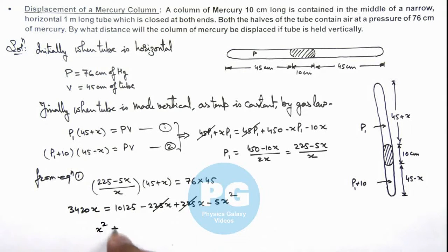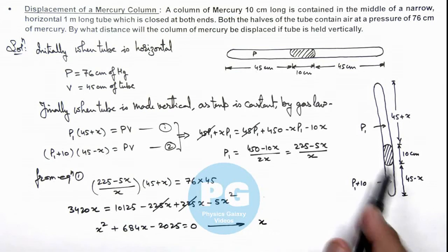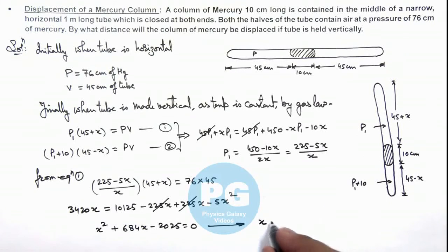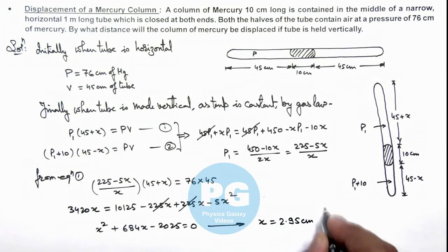Now you can directly simplify this quadratic equation and get the roots of x. I am directly writing the result here. You can discard the negative root of x, which is the displacement of mercury column, as it cannot displace upward, it will only displace in downward direction. So value of x will be getting here will be 2.95 centimeter. That will be the result of this problem. Here I have left this solution as an exercise for you to evaluate this quadratic equation roots and verify the result.